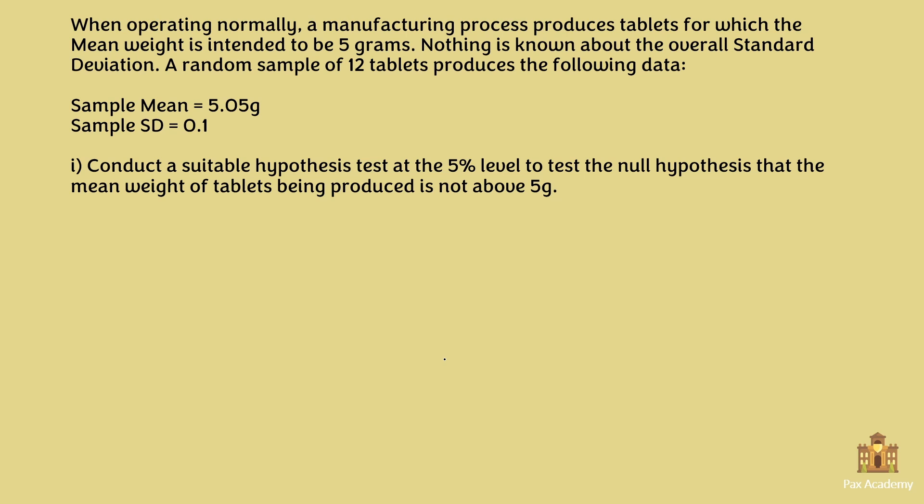Let's look at another example. When operating normally, a manufacturing process produces tablets for which the mean weight is intended to be 5 grams. Nothing is known about the overall standard deviation. A random sample of 12 tablets gives a sample mean of 5.05 grams and a sample standard deviation of 0.1. Conduct a hypothesis test at the 5% level to test that the mean weight of tablets being produced is not above 5 grams. We again use the t-test because the sample size is 12 and the population standard deviation is unknown.